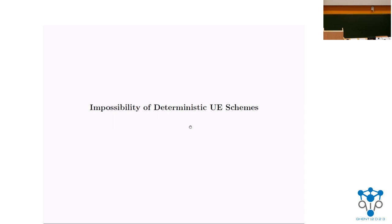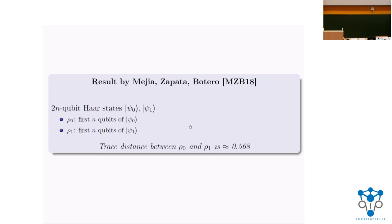Let's dive into the technical details, starting with the impossibility of deterministic unclonable encryption. Central to this theorem is a result by Meiji et al.: given two n-qubit Haar random states psi-0 and psi-1, if you look at the reduced density matrix on the first n qubits of both states — call them rho-0 and rho-1 — the trace distance between these two states is roughly 0.568. The key point is that this constant is bounded away from one-half.